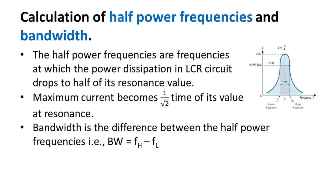The maximum current becomes 1/√2 times its value at resonance. The power at resonance is P = I_max² · R. The power at the lower or upper half power frequency is P/2 = (I_max/√2)² · R. Therefore, the current at half power frequency is I_max/√2 — that is, 1/√2 times the current at resonance.